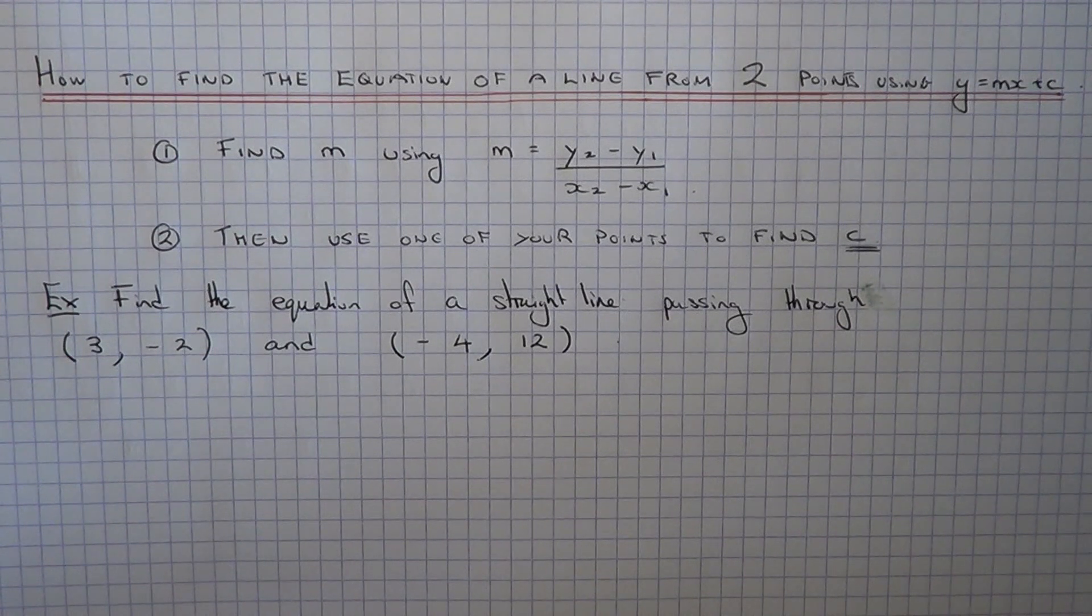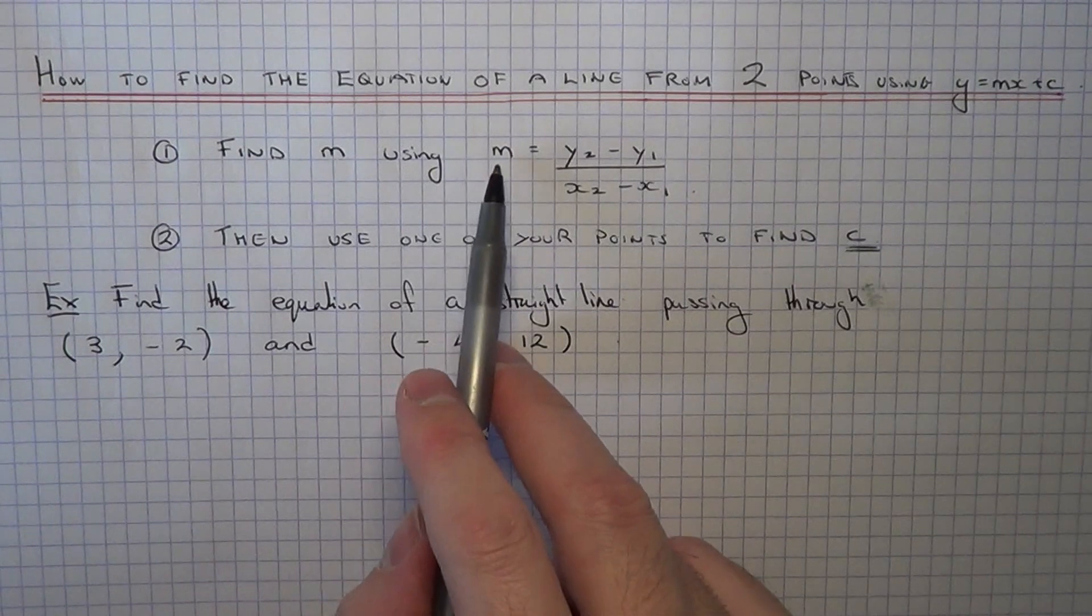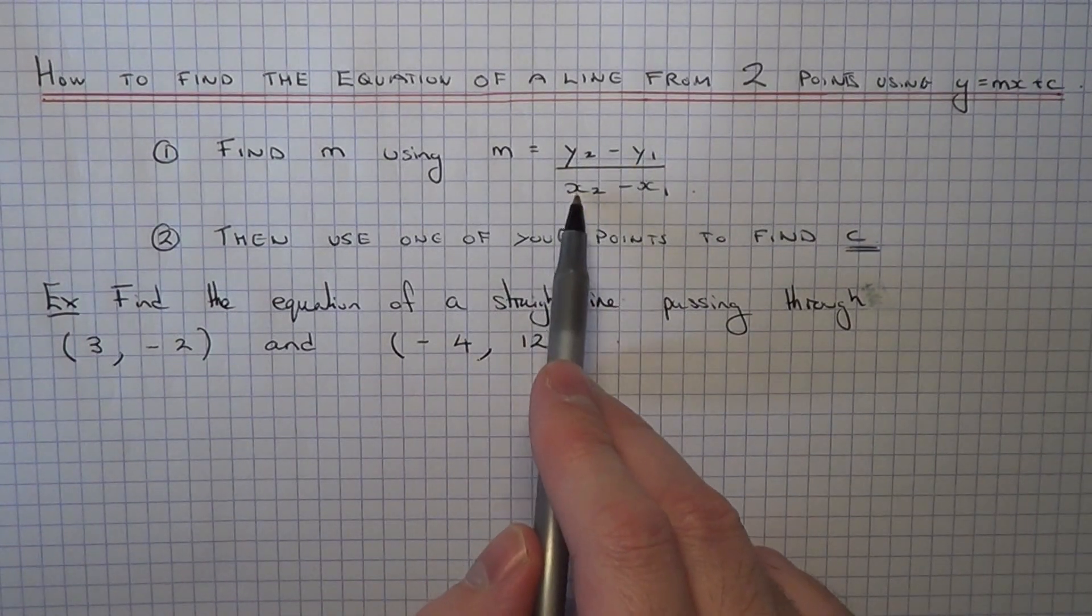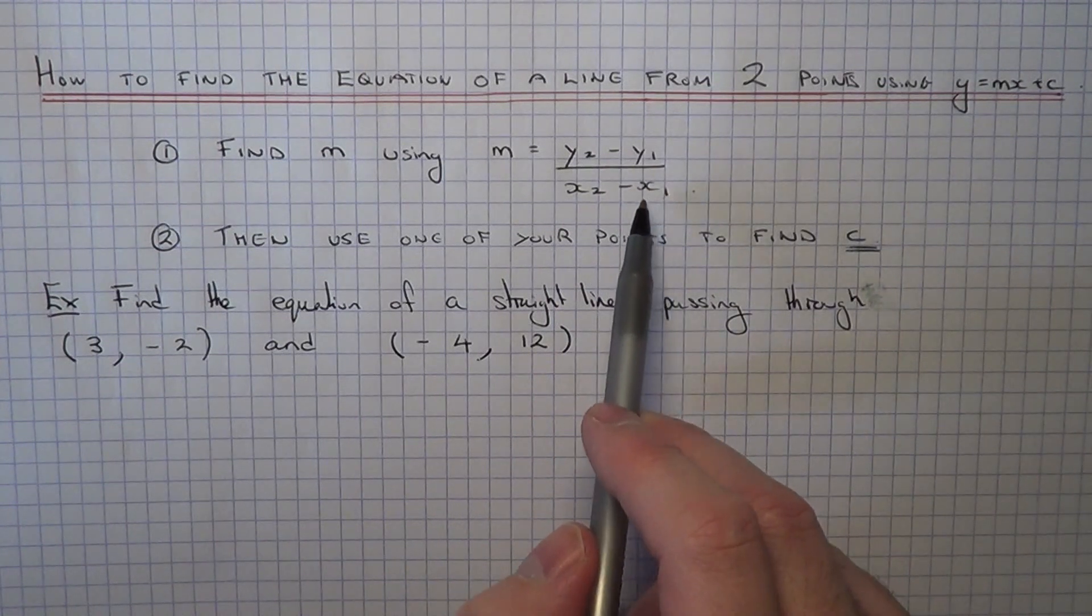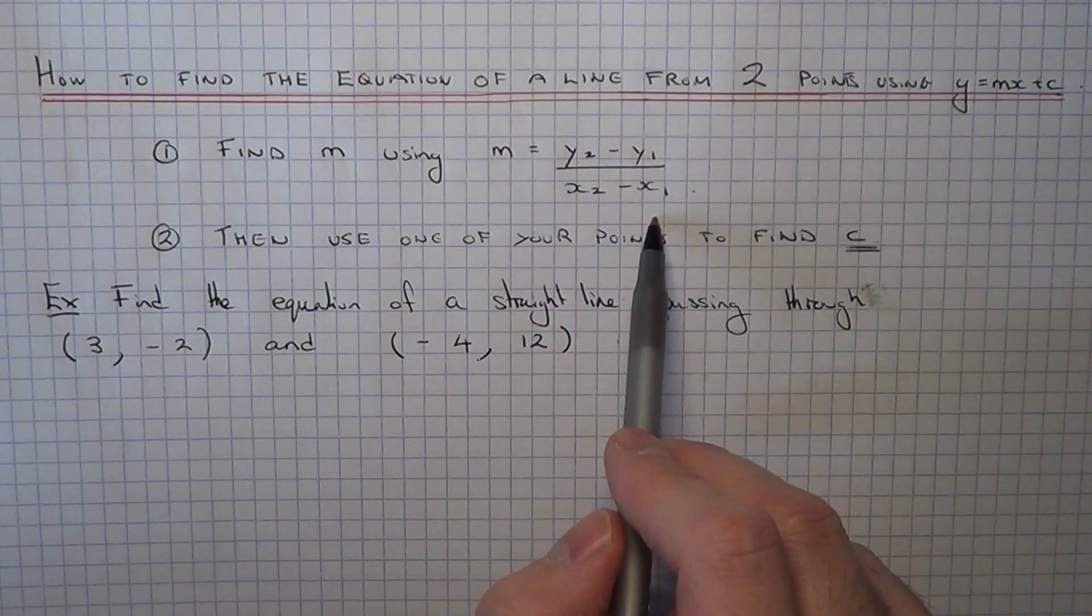So to do this, first of all you will need to work out the gradient. And to work out the gradient you can use the formula y2 minus y1 over x2 minus x1. If you don't know how to do this already make sure you watch my other video on this.